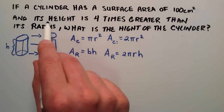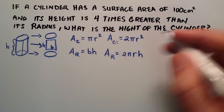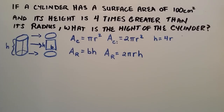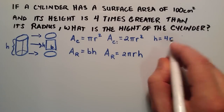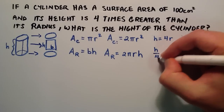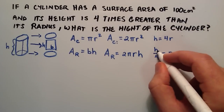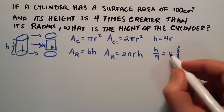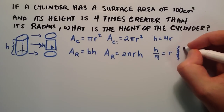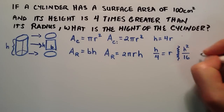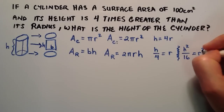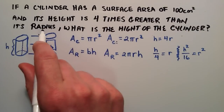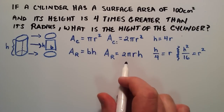We know the height is four times greater than the radius, so h = 4r. Dividing both sides by 4 gives us h/4 = r. We can also square both sides of that: h²/16 = r². So we have three useful relationships derived from the condition that height is four times greater than the radius. Now let's go ahead and solve the problem.